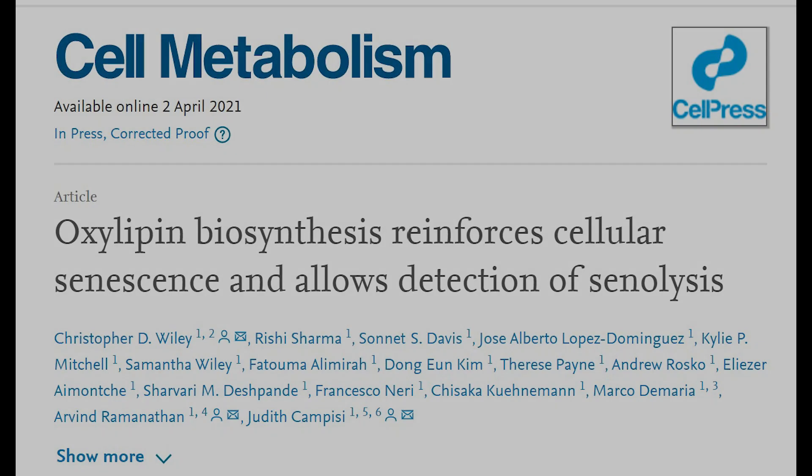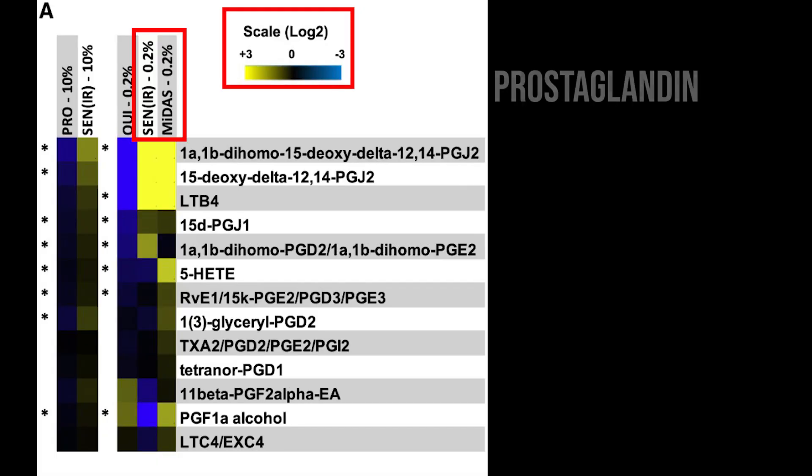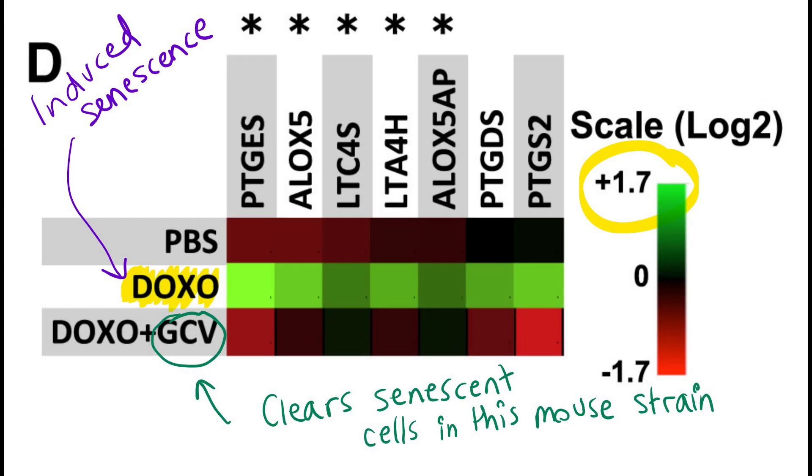Anyway, to go back to this Cell Metabolism paper, so far we've seen that senescent cells accumulate highly this dihomo-15d PGJ2. And this was also confirmed in vivo, so in mice, whereby they saw increased upregulation of genes involved in oxylipin synthesis, in mice treated with doxorubicin to induce the development of senescent cells in these mice. And when they cleared the senescent cells in these mice, you can see that the expression level of these different genes also goes back down.